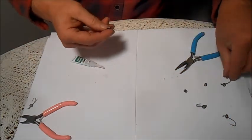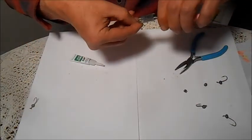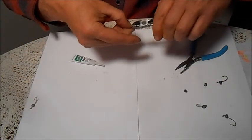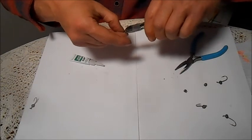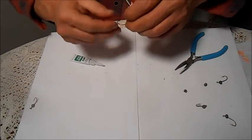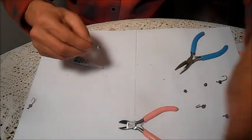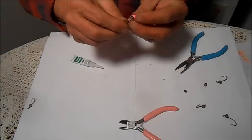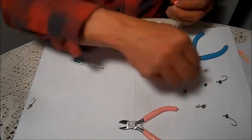But once you have the shape of sinker you want, just grab a piece of clay. I'm going to use this one here, of course after your super glue dries.